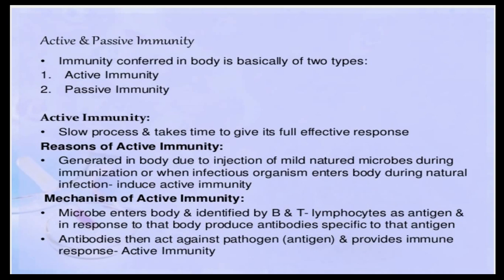Vaccines are nothing but weakened or dead microbes or pathogens which are injected into the body. By either of these two ways — natural entry or vaccination — it induces active immunity. When the microbe enters the body, the B and T lymphocytes identify these microbes as antigens. B lymphocytes produce antibodies, and T lymphocytes help the B cells produce antibodies. These antibodies attack the pathogen and produce an immune response — that is called active immunity — and that is why it takes sufficient time.